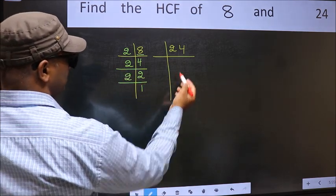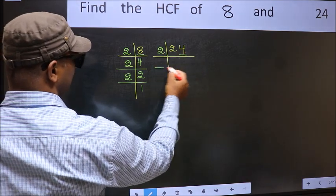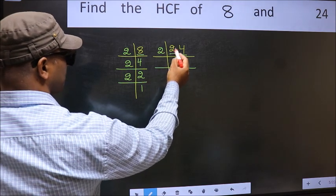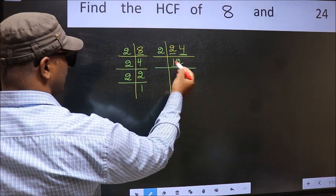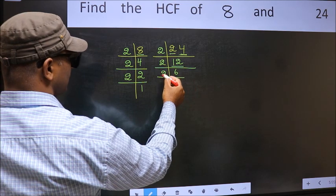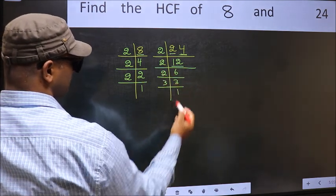Now the other number. Last digit 4 even so take 2. First number 2, when do we get 2 in 2 table? 2 times 1 is 2. The other number 4, when do we get 4 in 2 table? 2 times 2 is 4. Now 12 is 2 times 6 is 12. 6 is 2 times 3 is 6. 3 is a prime number so 3 times 1 is 3.